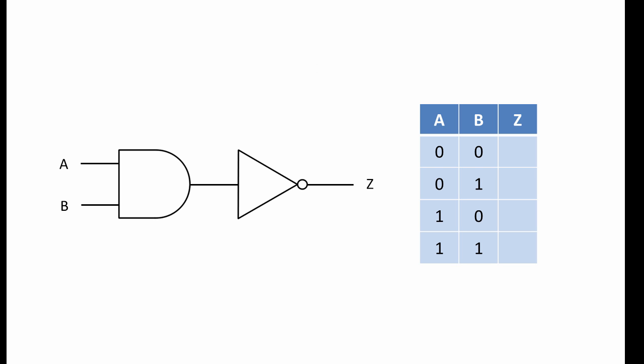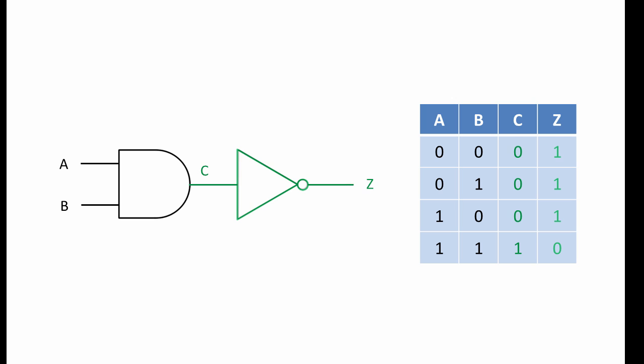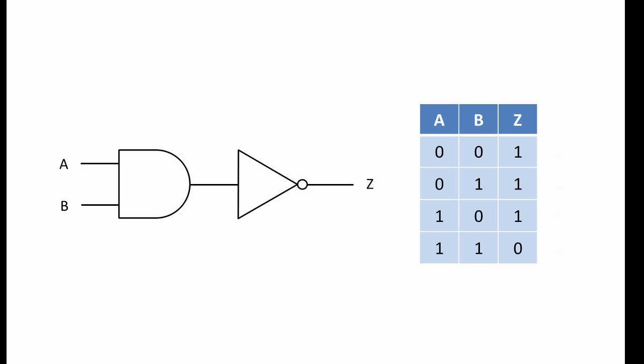This combination is an AND gate followed by a NOT gate. To get the values at Z, we can consider position C first of all. Each value at C is simply the result of passing combinations of A and B through an AND gate. You can see in the bottom row, when both A and B are 1, the value of C is 1. To get each value of Z, we then pass each value of C through a NOT gate. So here is our truth table. We can ignore values of C if we are not interested.